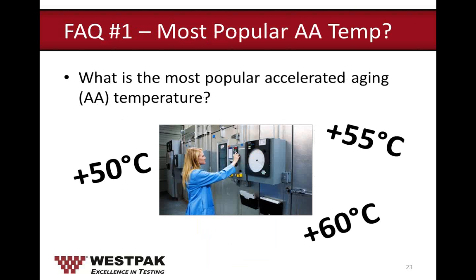Before questions from the audience, let's go through some frequently asked questions. The first: what is the most popular aging temperature? As I mentioned, 55°C with uncontrolled RH is the most popular. We also offer 50°C for products that cannot handle high temperatures, and 60°C for customers who want to further reduce aging time.